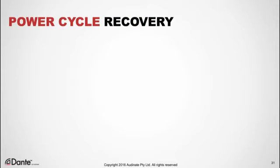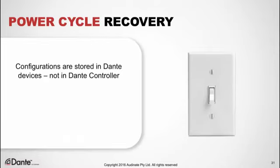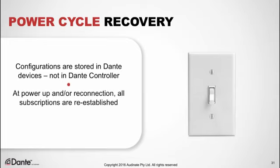What happens when we disconnect or power down devices, or if the power goes out? Fortunately, in Dante, configurations are stored in the devices themselves, not in Dante Controller. So when we unplug or power down devices, they disappear from Dante Controller. But when we power up our devices or connect them again, they reappear in Dante Controller and all the subscriptions are immediately re-established. We don't even need Dante Controller on the network in order to do this.